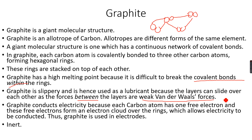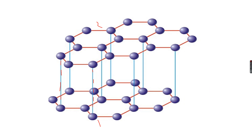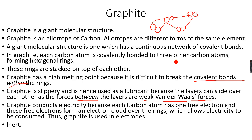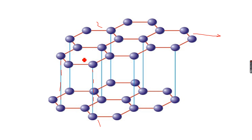Between the layers, there are weak van der Waals forces, which is why graphite is slippery and used as a lubricant. When pressure is applied, one layer can slide over another because the van der Waals forces are easily overcome. The layers extend in all directions, making it a giant molecular structure, and there are millions of such layers in graphite.